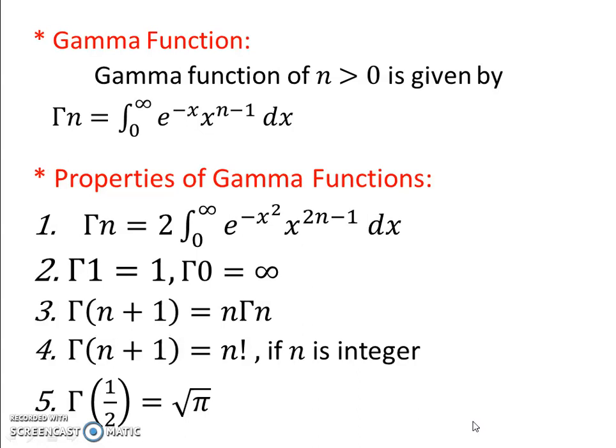The fifth property is Γ(1/2) = √π. We will not prove this now because it requires knowledge of beta functions; we will prove it after studying beta functions. As a quick revision: the most important property is Γ(n+1) = n·Γ(n), and for integers Γ(n+1) = n!. For half-integer values: Γ(3/2) = (1/2)·Γ(1/2), Γ(5/2) = (3/2)·(1/2)·Γ(1/2), and Γ(7/2) = (5/2)·(3/2)·(1/2)·Γ(1/2). Similarly you can find Γ(11/2), Γ(13/2), and so on.